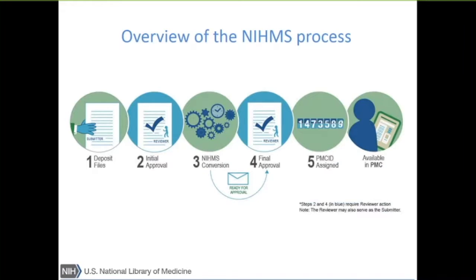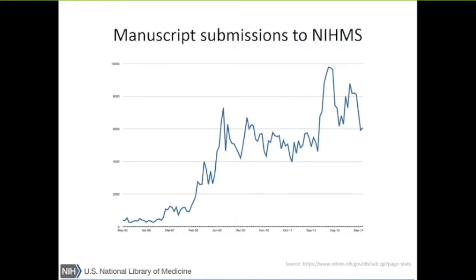The PMC ID is how the grants office tracks that they're being compliant with the public access policy, and PIs have gotten very cognizant that this is the golden ticket they're looking for. If there was an embargo, we will apply that once we see that the article was actually published. We're constantly looking through the PubMed database to match it up to a PubMed citation, and once we've matched it and see the publication date, that's what we base release into PubMed Central off of. If it's immediate upon publication, it just goes right in; if there's an embargo, we'll hold it for six to 12 months.